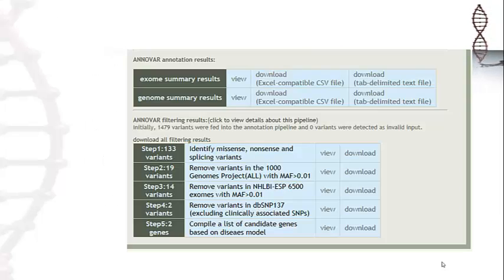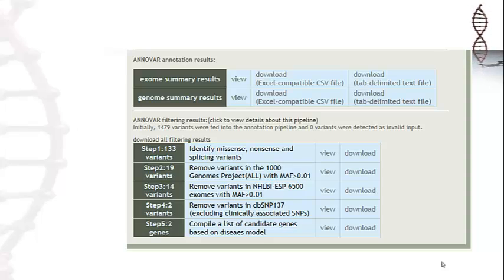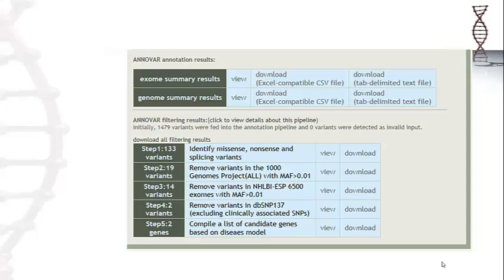Here is an example of results you might get when using ANOVA. As you can see, it gives you a variety of options to do with your sequences, such as identifying missense, nonsense, and splicing variants. You can also remove variants in your sequencing.